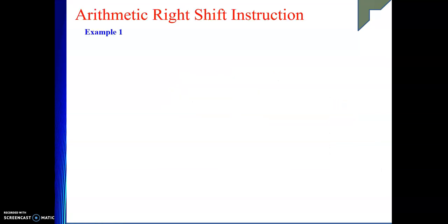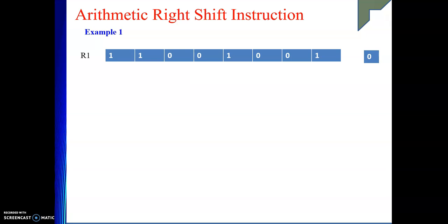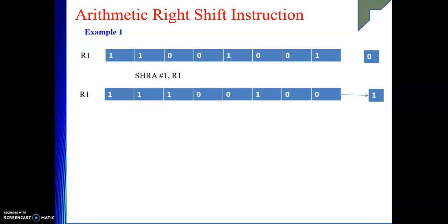Let's take the arithmetic right shift instruction. One example is given. This register content is given and we need to perform this instruction. R1 content will be shifted to the right by the arithmetic right shift instruction. The sign bit will be preserved and all the bits will be shifted to the right. So, the answer will come like this.